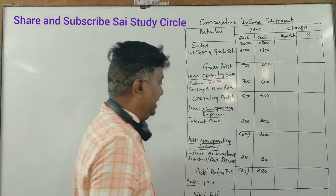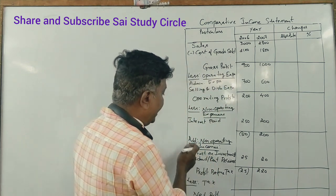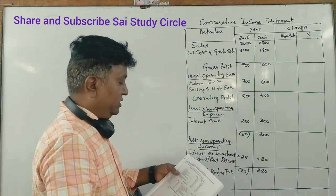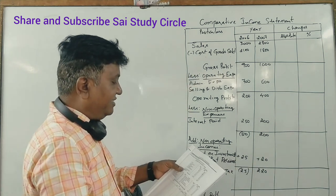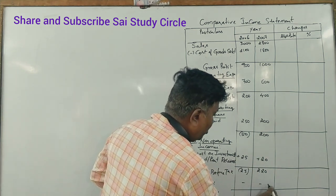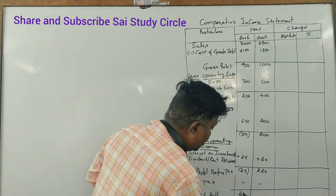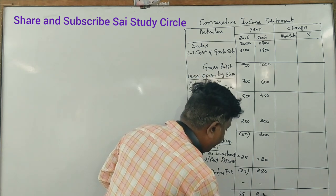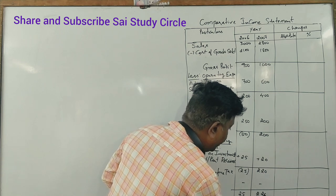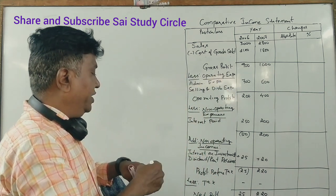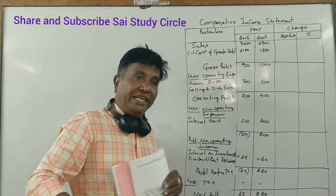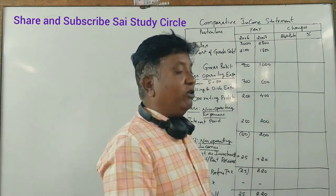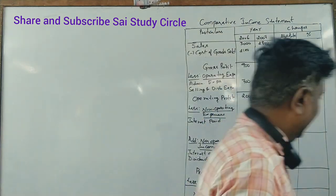Add non-operating income back to operating profit and subtract non-operating expenses. Taxes are not taxes here — the figures are 25 and 220. This gives us the net profit. Taxes are minus, so put that in the question. We need to fill the absolute column of our comparative income statement.